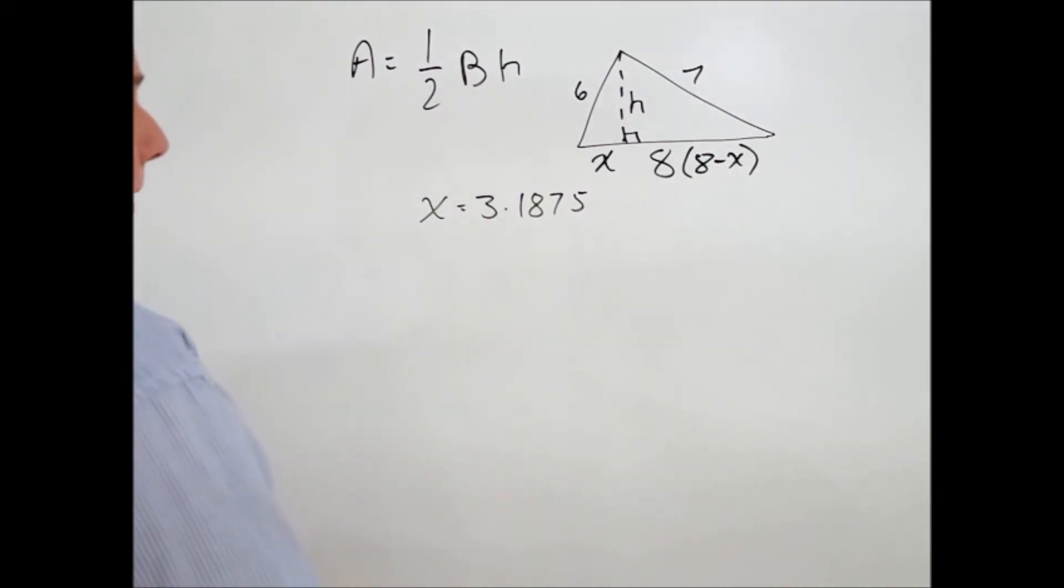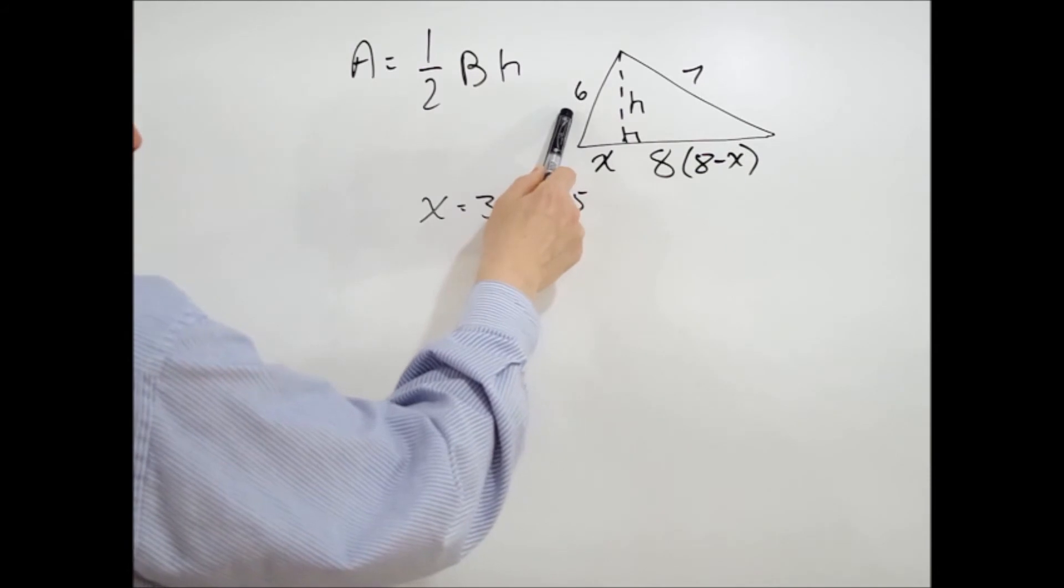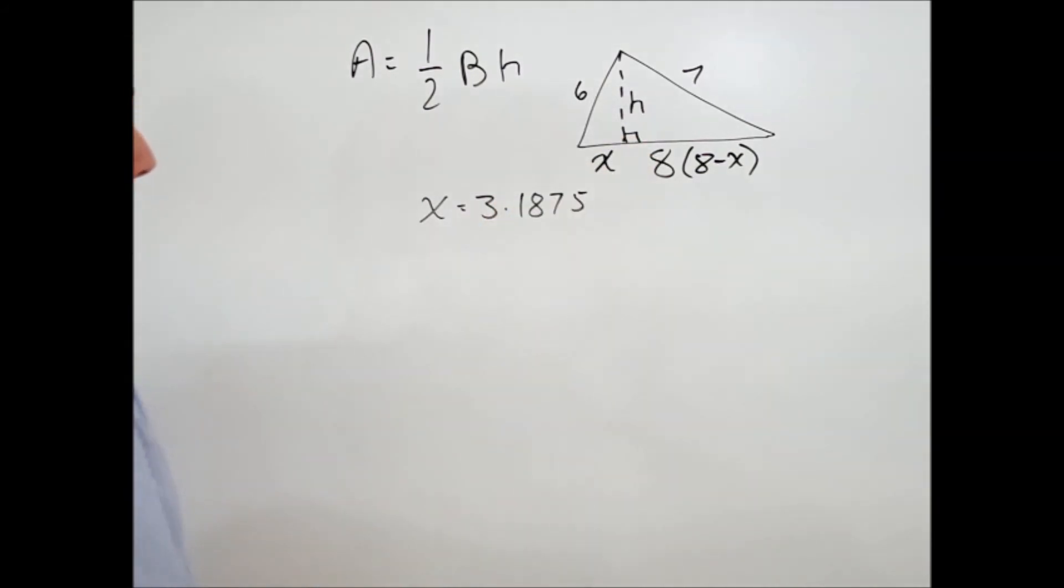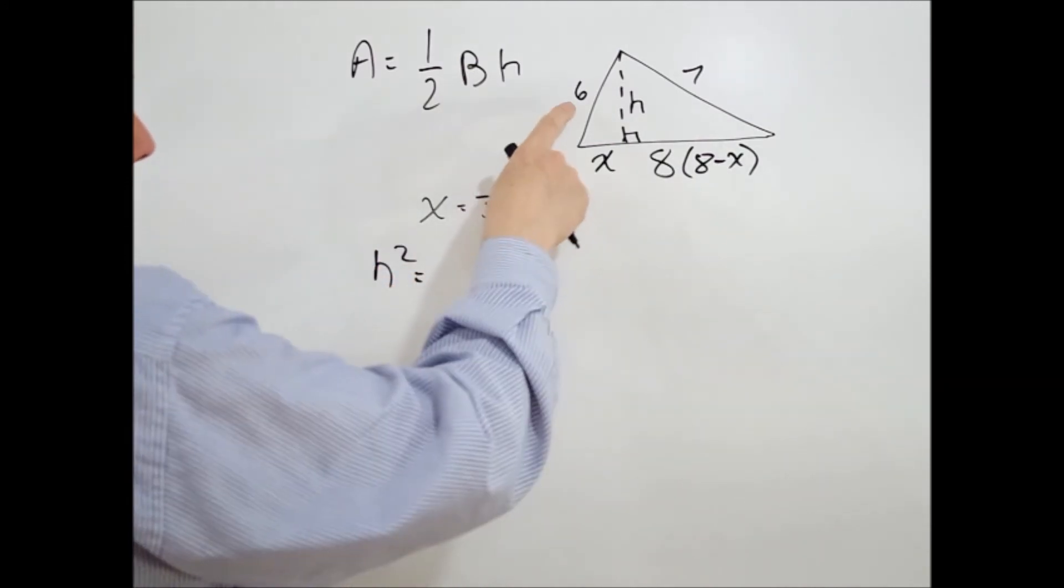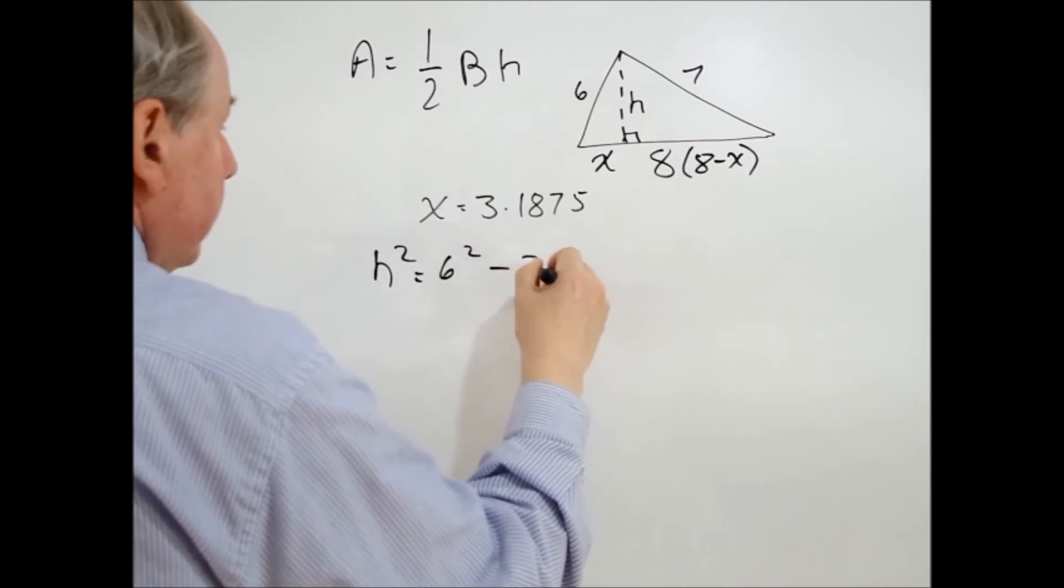Now we can take a look at this triangle to find out what H is because we know what X is and we know that we've been given the 6, so we're looking for the value of H. So H squared is equal to 6 squared minus X squared.